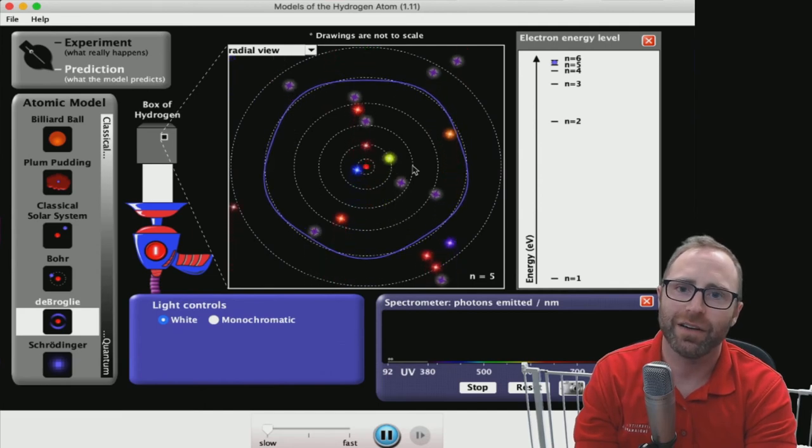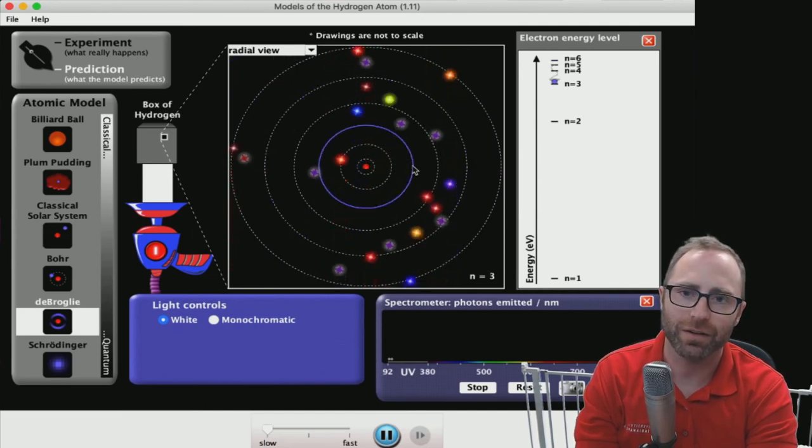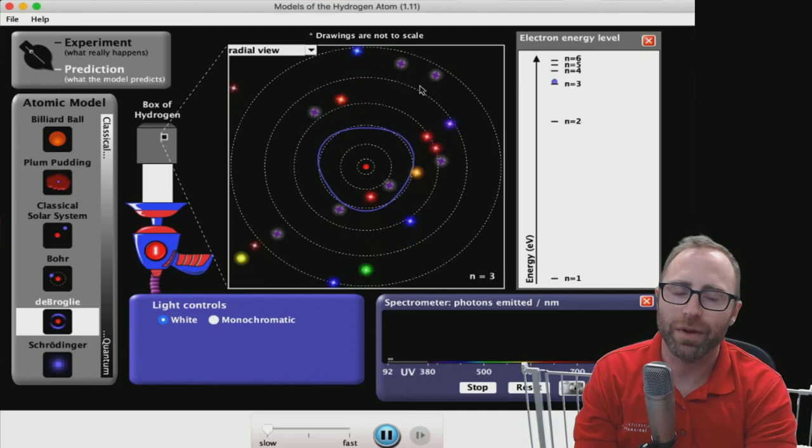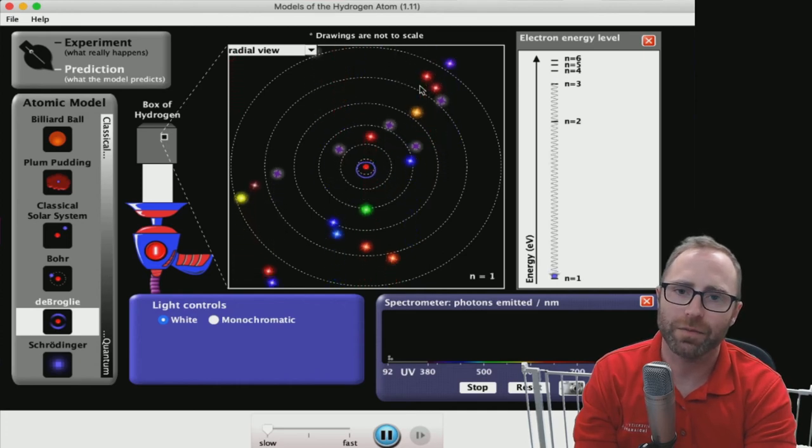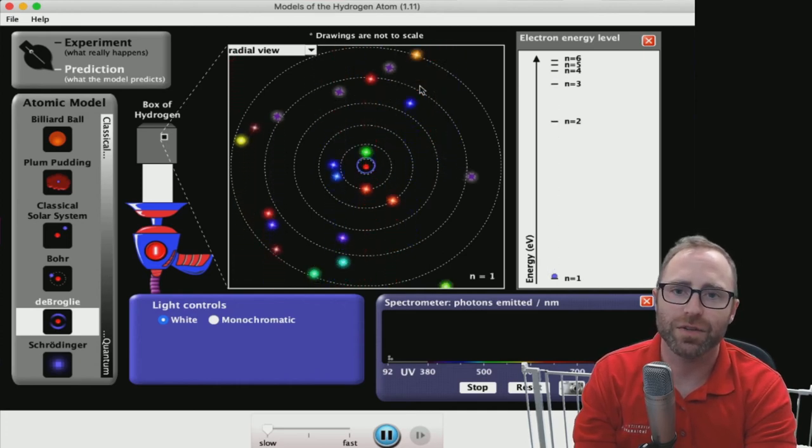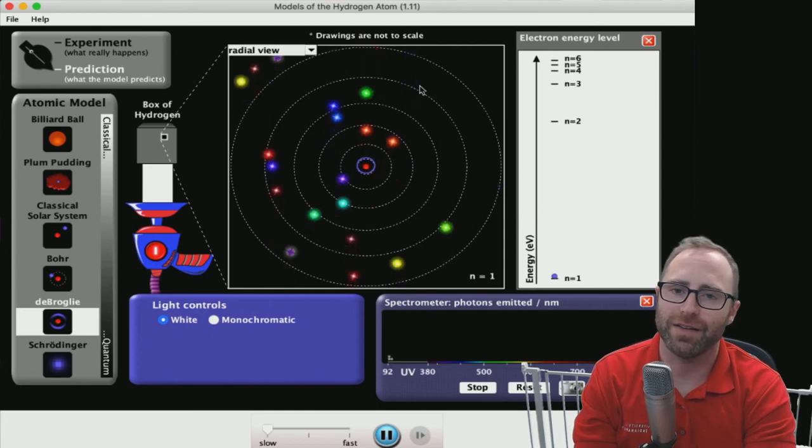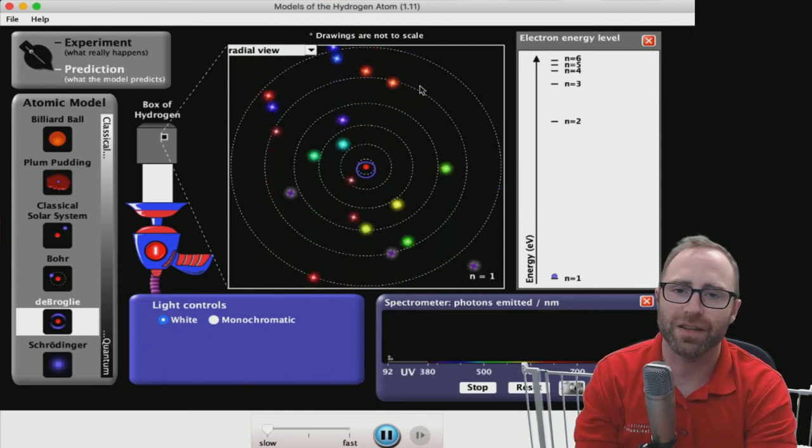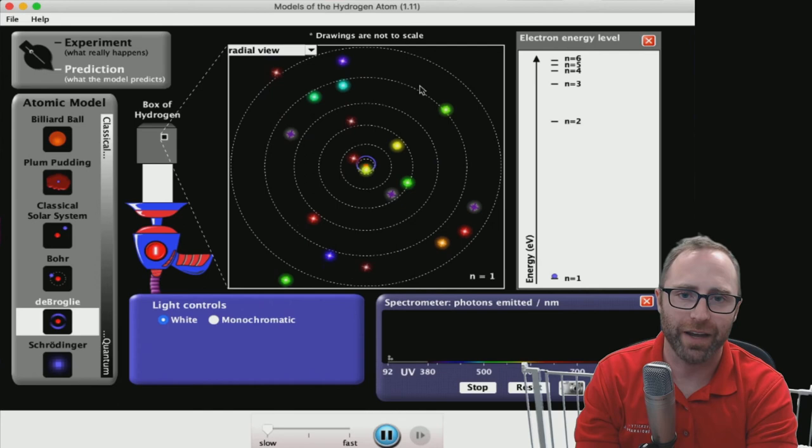We still have energy levels, so it still nicely matches the experimental data that we get. But now we're thinking, hey, these electrons, it's not an individual particle. In fact, one of the big pitfalls that often comes from general chemistry is that students try to think of an electron as that ball as it's moving through space. It's actually way more complicated than that.